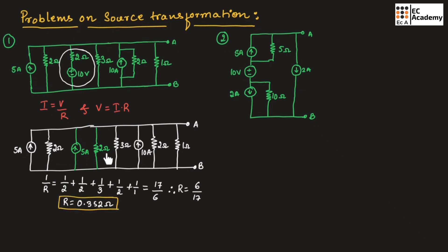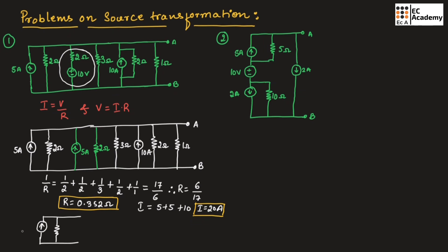If we add all the current source values it will be 5 + 5 + 10 = 20 amperes. So the current source value is equal to 20 amperes. We can write the above circuit with a single current source and a resistor in parallel.